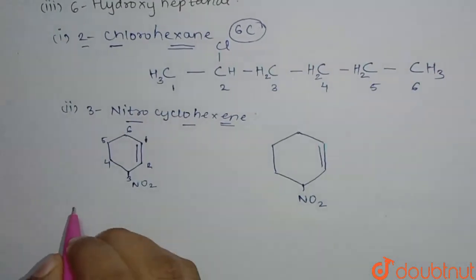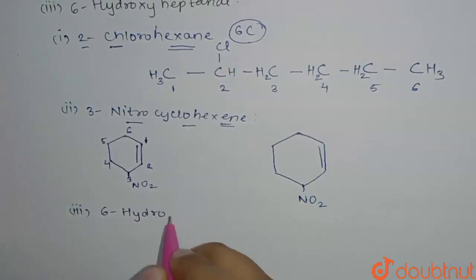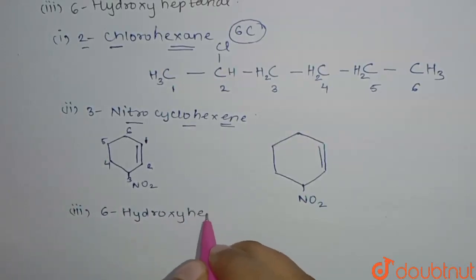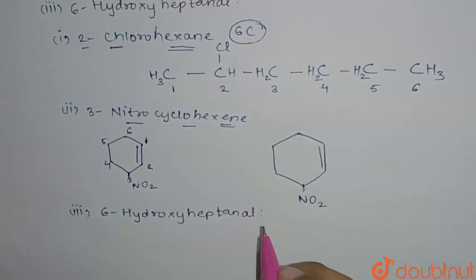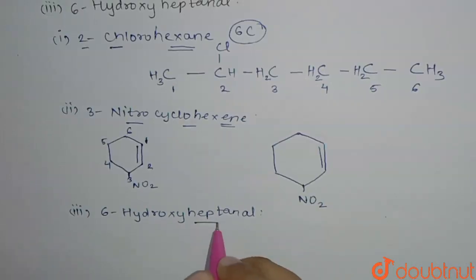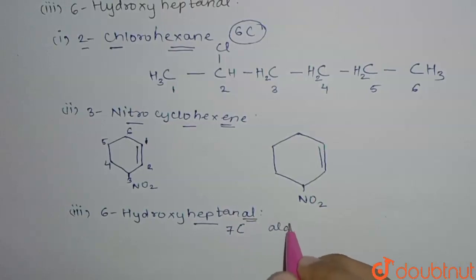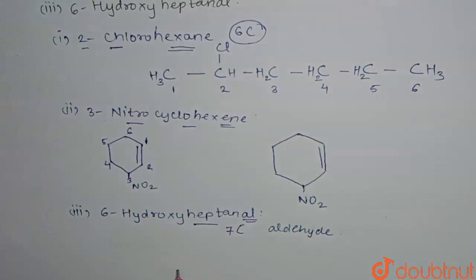Next we have 6-hydroxyheptanal. If we look at the name, 'heptane' means it has 7 carbons, and the suffix 'al' means we have an aldehyde group. So our 7-carbon chain has an aldehyde group which we will include as the 1st carbon.